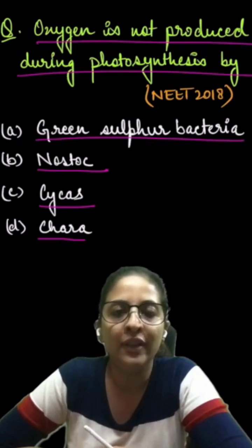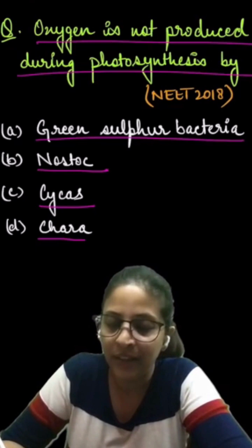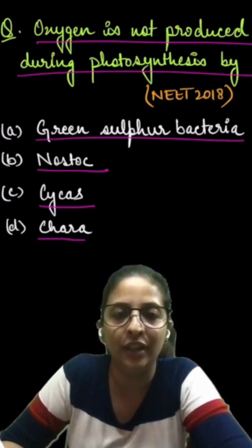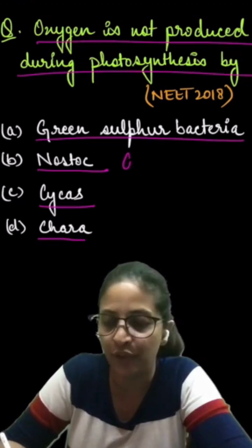During photosynthesis while light reaction is taking place, in case of green Sulphur bacteria they produce energy rich intermediates, chemicals like ATP and NADPH by the process of cyclic photophosphorylation.